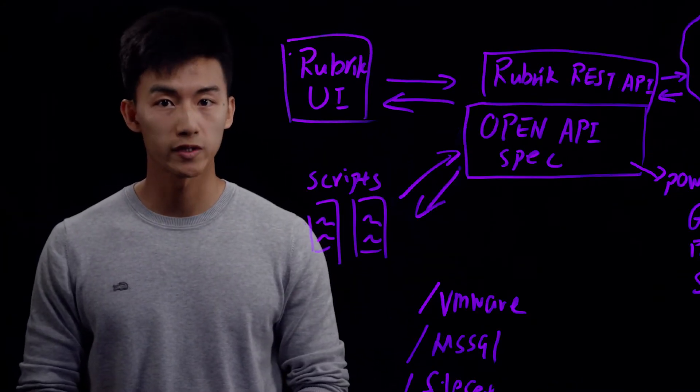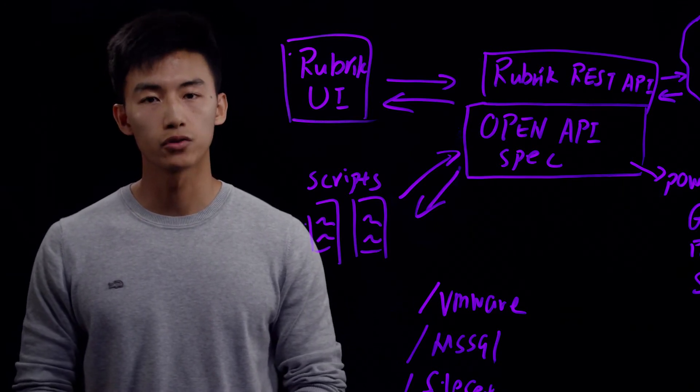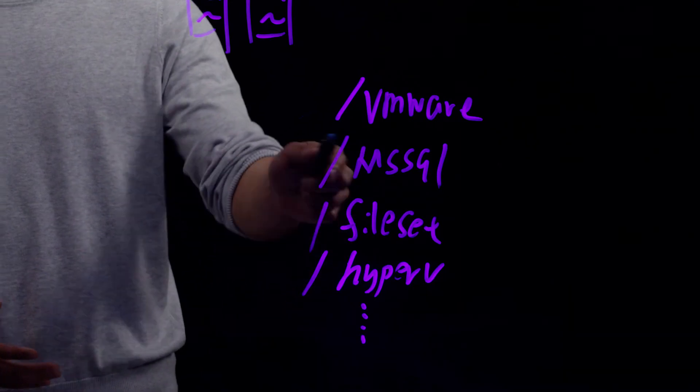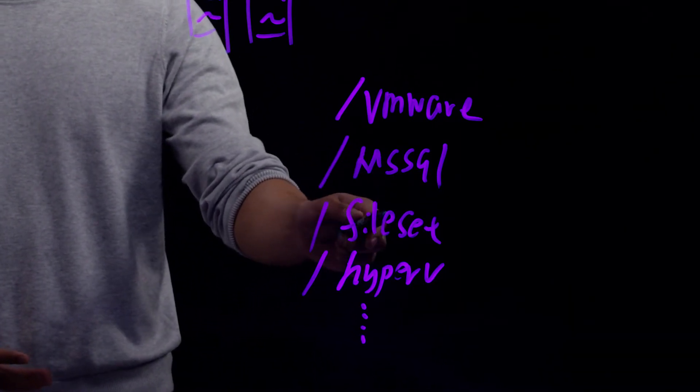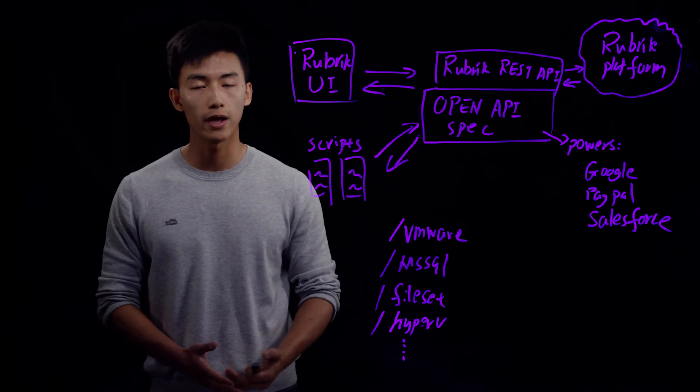Rubric REST API is resource-centric. We have divided all our resources into different resource types, such as VMware, MSSQL, Fileset, Hyper-V. The list keeps going on, and every release, we actually add more endpoints.